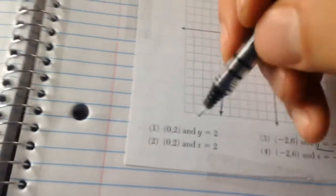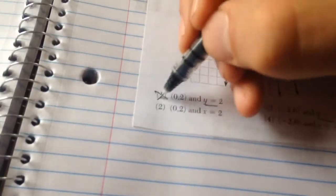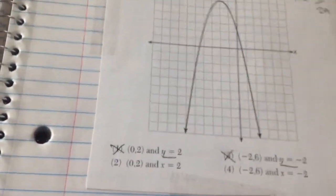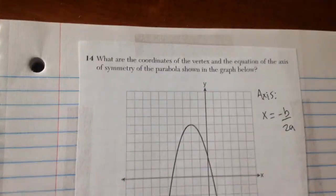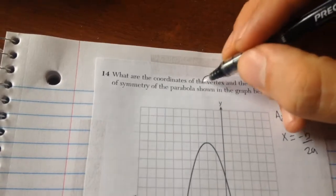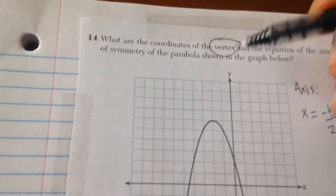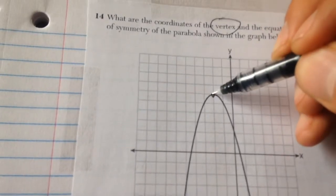Okay now the vertex means the highest or lowest point of the parabola.